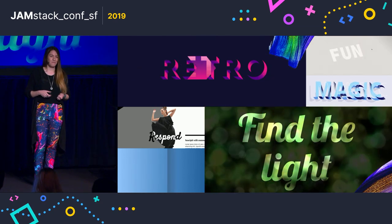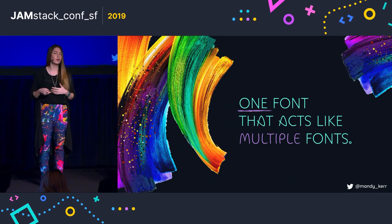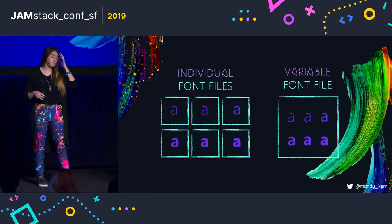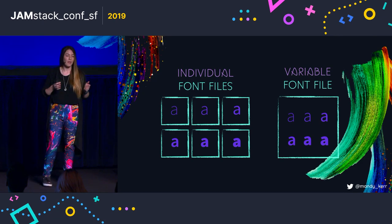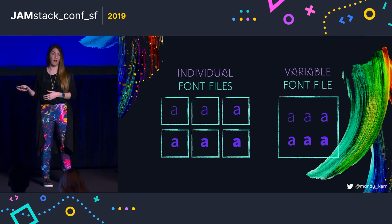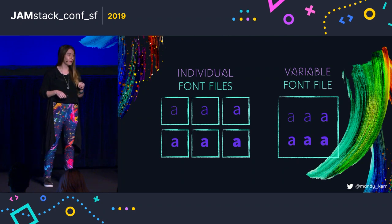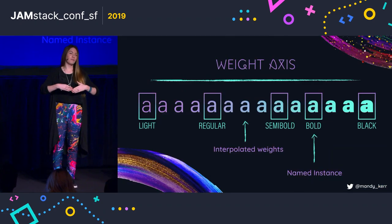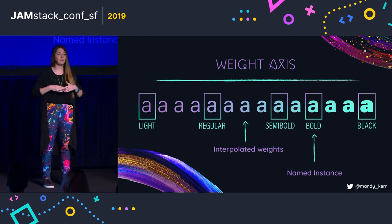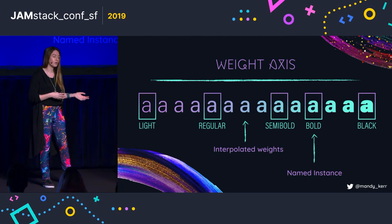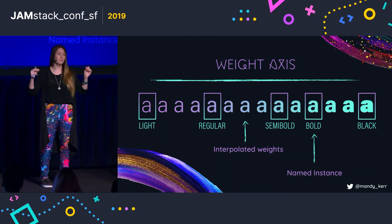A variable font is one font file that acts like multiple fonts. This all comes down to how the font is made. At the moment, when you have a font, you might have several different font weights, for example, and these exist as separate individual files. With a variable font, all of that information exists in one file. This is accomplished by different axes within a font — a variable font can have one or more axes representing different style variations, like weight.